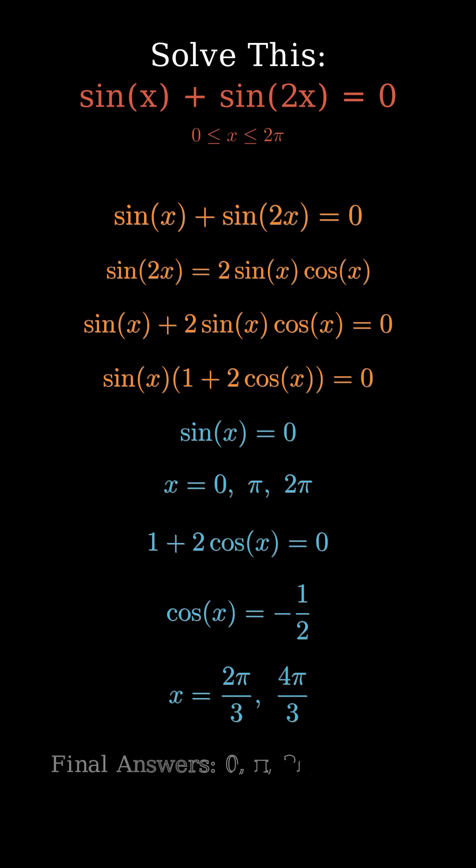So combining both parts, the full set of solutions between 0 and 2π is 0, π, 2π, 2π over 3, and 4π over 3.